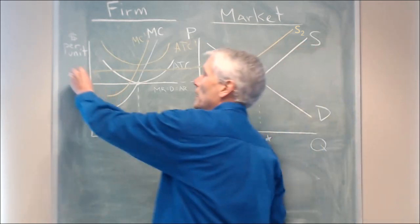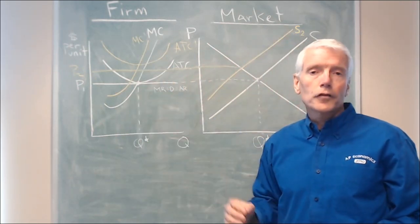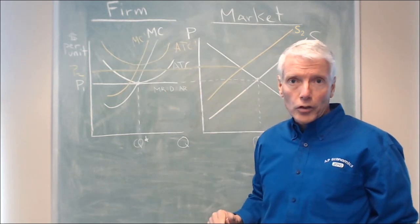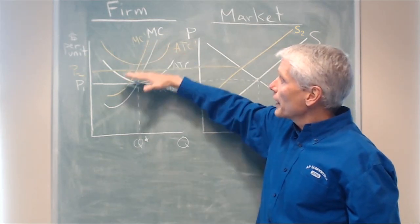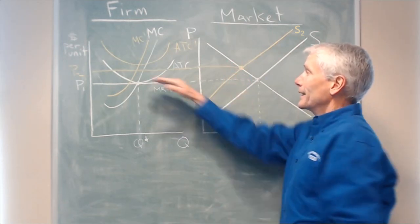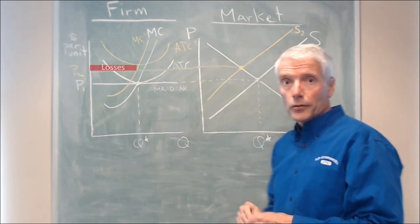So initially we have P2 here and what's going on for the firms. They are making losses because the minimum of average total cost is up here and the price dictated by the market at the market equilibrium is down here. So initially in the short run firms are going to be making losses.